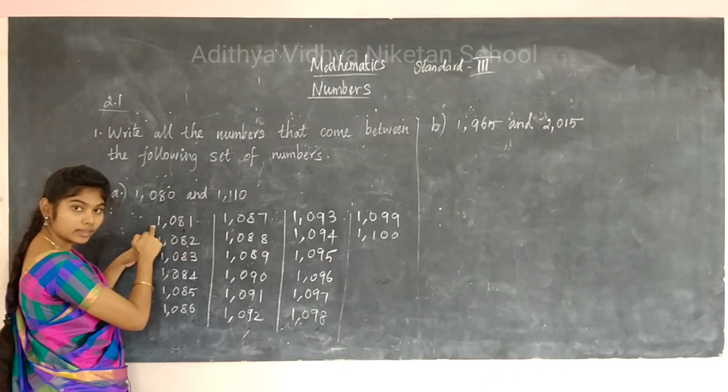Now we shall see the second sum: place a comma at the appropriate place in the given numbers. Where should we place the comma? In between the hundreds place and the thousands place. We already know the place values — ones, tens, hundreds, and thousands.